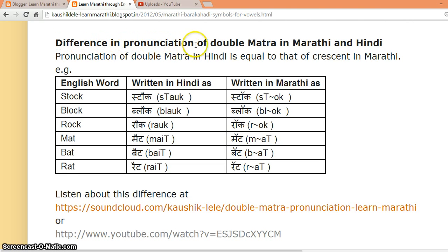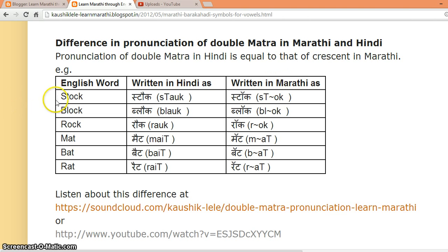Difference in pronunciation of double matra in Marathi and Hindi. As we had seen before, double matra can be given above a consonant to indicate the sound of 'i' or 'au'. But in Hindi, the pronunciation of double matra is different than in Marathi. For example, the English word STOCK will be written by a Hindi person one way, whereas it will be written by a Marathi person differently.